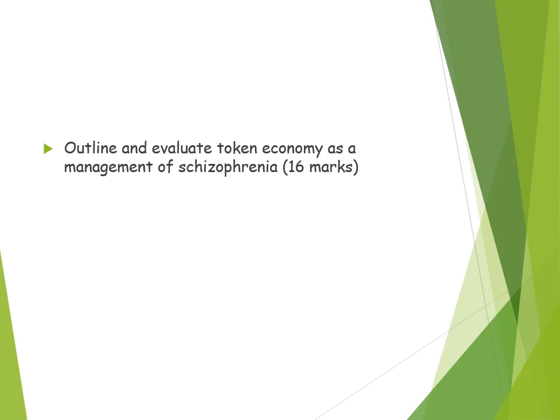For evaluation, aim for a minimum of three points using a point–evidence–explain–link structure. Include a counter-argument within the supporting evidence: yes, token economy does appear to have an effect on maladaptive behaviour, but patients in hospitals are also on drug treatment alongside token economy, so it may not be as effective as first thought. Then discuss the issue that it doesn't appear to offer any long-term benefit — once reinforcers are removed the patient reverts to maladaptive behaviour. Also note that the token or reward must be given immediately after the desired behaviour, otherwise it has no effect.